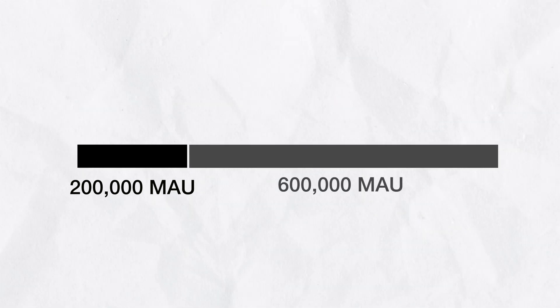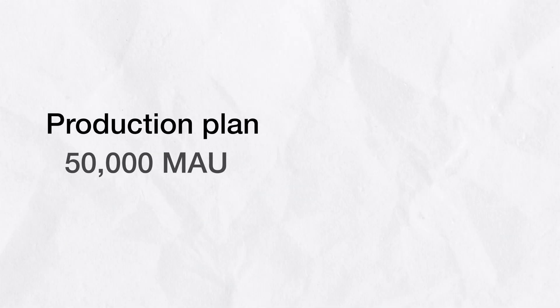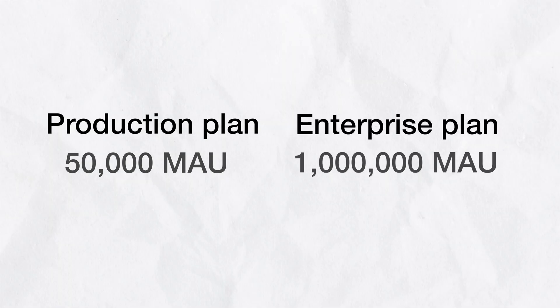Consider a customer who has 800,000 MAU on the enterprise plan. They get 200,000 MAU for free, but then pay for the other 600,000 MAU, which costs $3,000 per month. We're now including 50,000 MAU with the production plan and 1 million MAU with the enterprise plan. To be clear, 1 million MAU means you can send all 1 million users over-the-air updates throughout the month — it's not 1 million updates, it's 1 million users. That team with 800,000 MAU will now save $3,000 per month, so if you're already a subscriber, your bill may be lower on your next billing cycle.